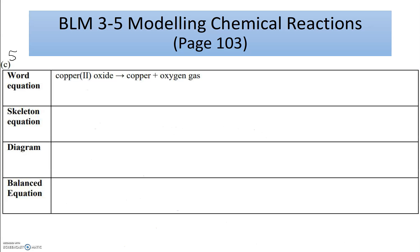For 5c, we're given that copper 2 oxide reacts to produce copper and oxygen gas. My reactant is copper 2 oxide — it's a compound. Using the stock system, I've got a copper 2+ ion and the oxide ion, which is the O2- ion.